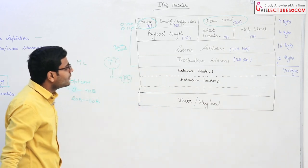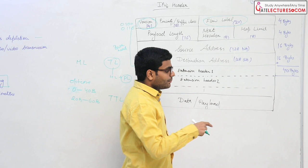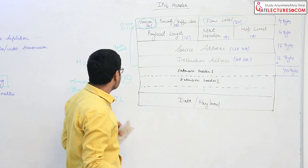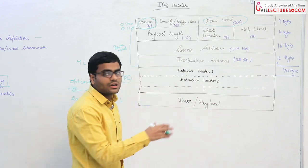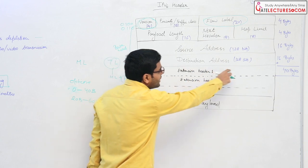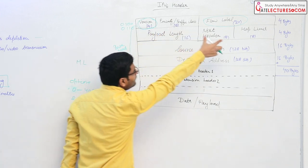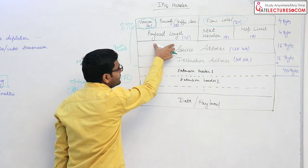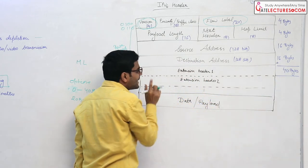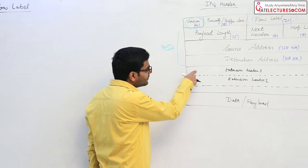The next field is hop limit. In IPv4, we have a field called TTL — time to live. Hop limit and TTL are essentially the same: they represent how many intermediate nodes the packet has crossed from sender to receiver. The name changed because hop limit makes more sense than time to live. Then we have the source address (128 bits) and destination address (128 bits). This entire structure is called the base header, and its total length is 40 bytes, fixed for every packet. After the base header, there are up to 13 extension headers and the data payload.